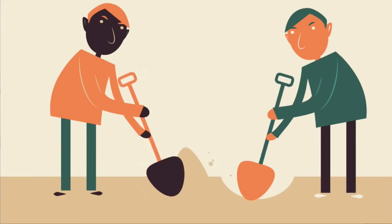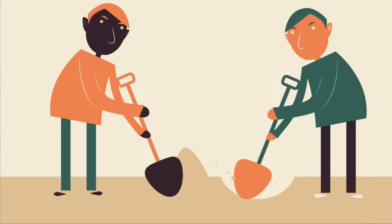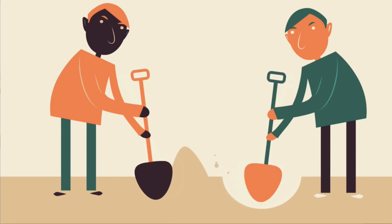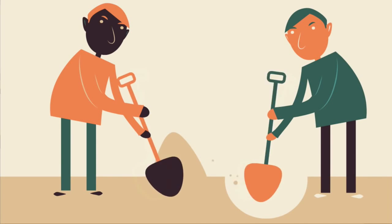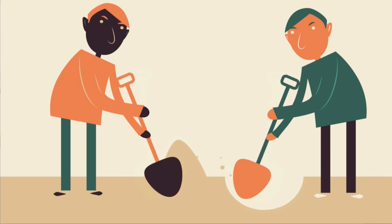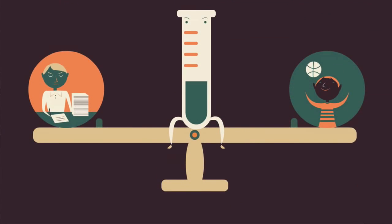Let's return to our original example of you digging a hole and your friend refilling it simultaneously. If you start digging at a rate faster than refilling, the hole gets larger. In order to maintain a constant size of the hole, your friend must work harder to fill it faster.